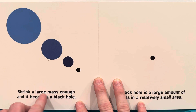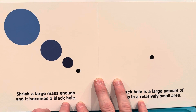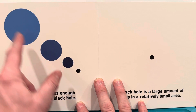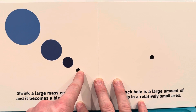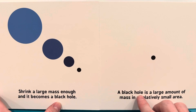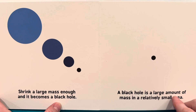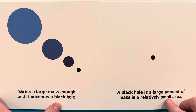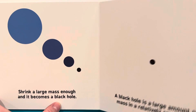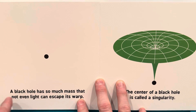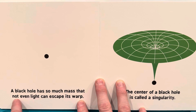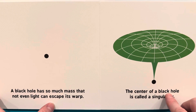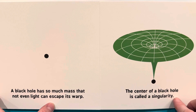Shrink a large mass enough and it becomes a black hole. A black hole has so much mass that not even light can escape its warp. The center of a black hole is called a singularity.